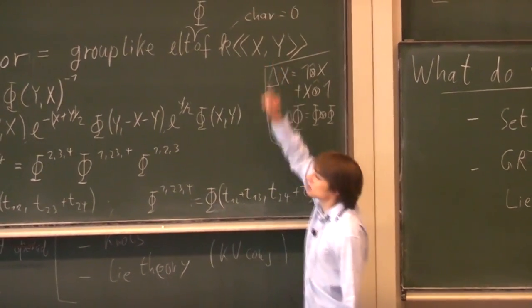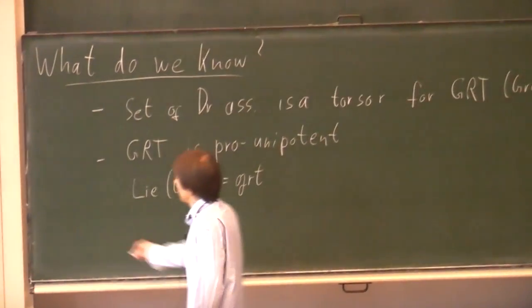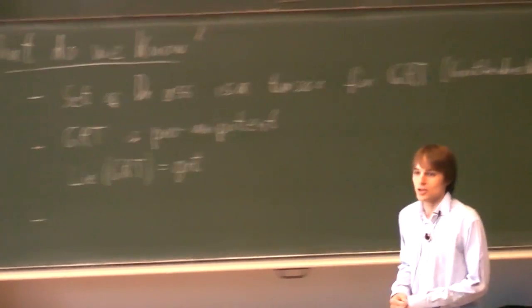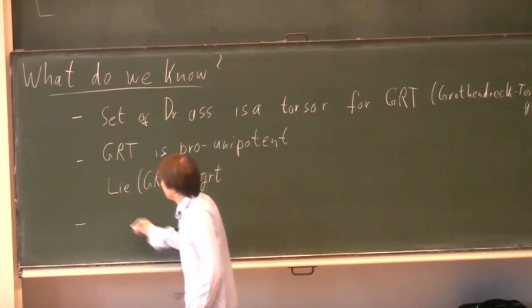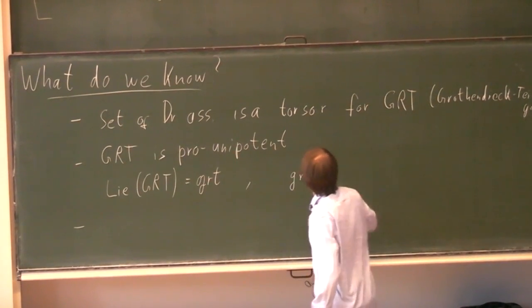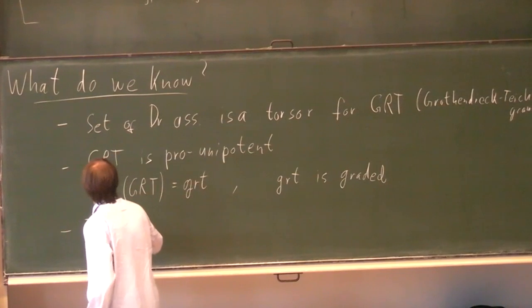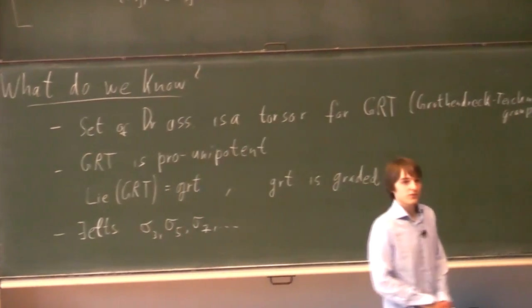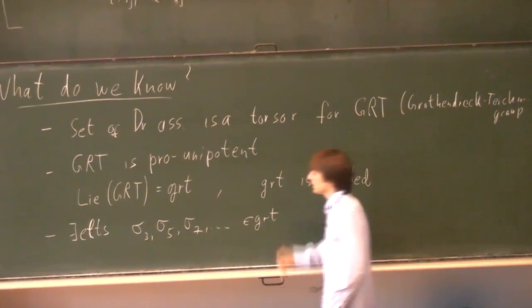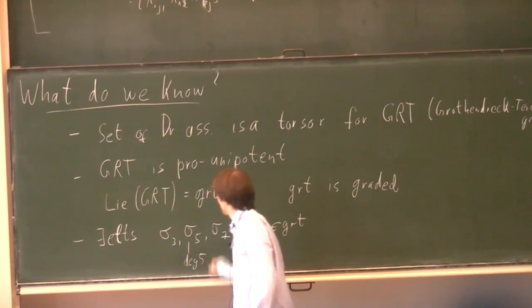The Grothendieck-Teichmüller group is pro-unipotent — a projective limit of unipotent groups — which means you can take arbitrary powers of elements. It makes sense to talk about the Lie algebra of this group, called the Grothendieck-Teichmüller Lie algebra GRT. By linearizing the relations you find the defining relations for GRT: a GRT element lives in the free Lie algebra generated by x and y, satisfying the linearized form of the Associator equations. GRT is graded, and we know there exist non-zero elements sigma_3, sigma_5, sigma_7, and so on in GRT, where the subscript denotes the degree.